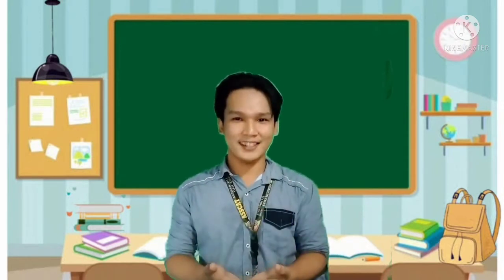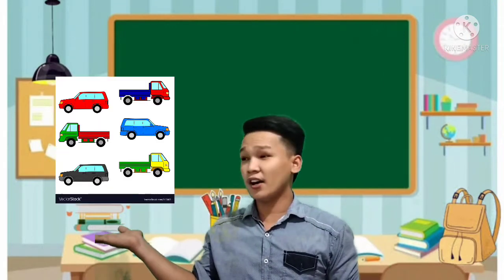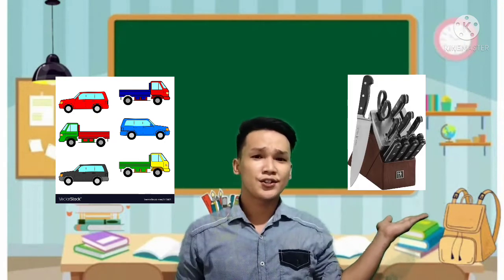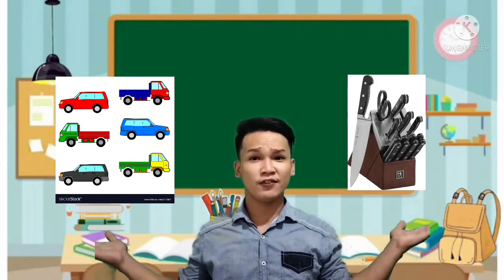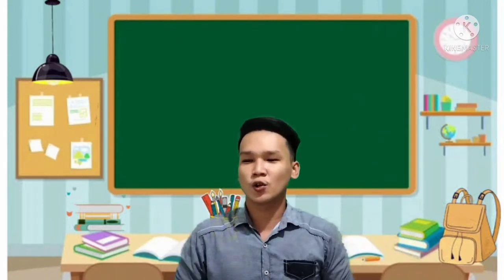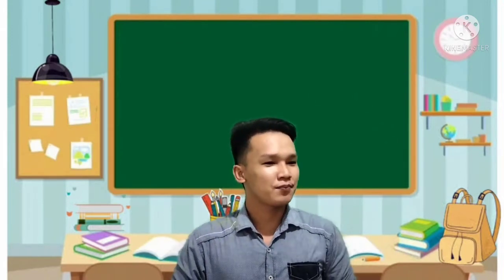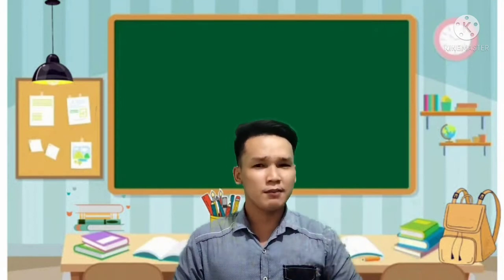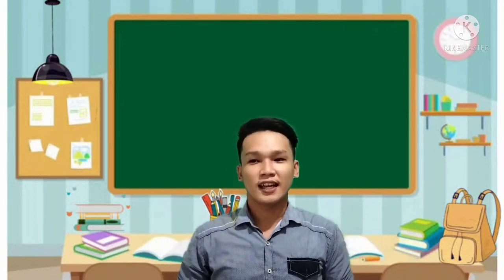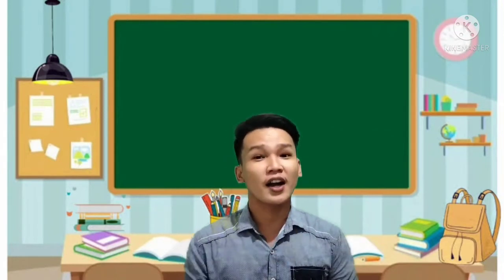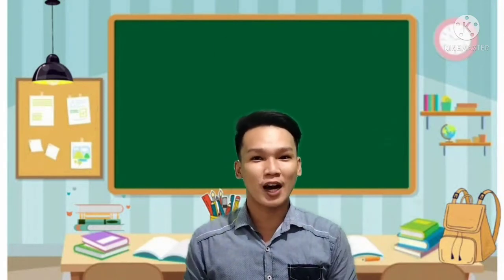Can you guess what our topic is for today? We have examples of a car here, and also we have a lot of examples of a knife here. So what do you call plenty of objects? A group, maybe? A bunch, maybe? Yes — it is a set! So our topic for today is all about the set.